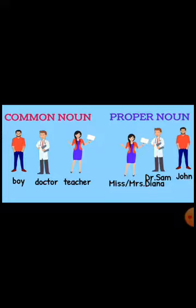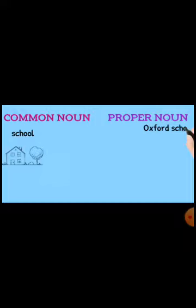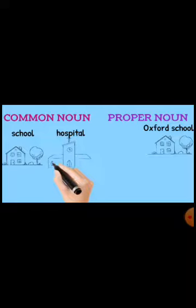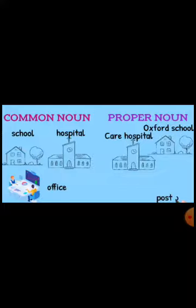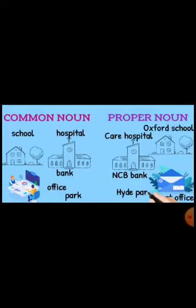Common Nouns and Proper Nouns in places: 'School' is common; 'Oxford School' is proper — the name of that particular school. 'Hospital' is common; 'Care Hospital' is proper — the name of that specific hospital. 'Office' is common; 'Post Office' is proper. 'Bank' is common; 'NCB Bank' is proper. 'Park' is common; 'Hyde Park' is proper. 'Lake' is common; 'Serpentine Lake' is proper — the name of that particular lake.